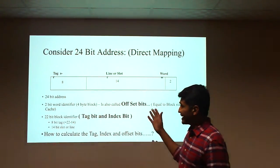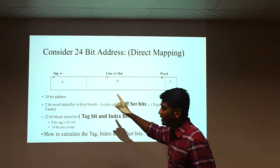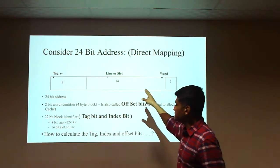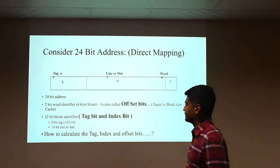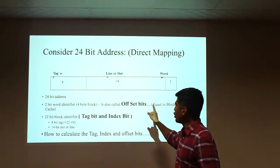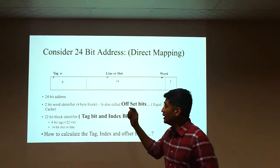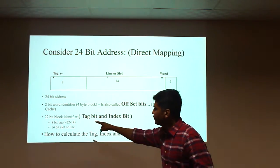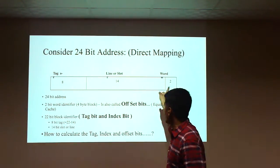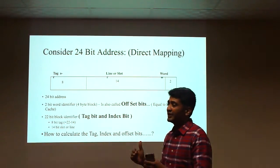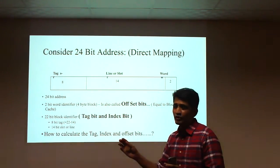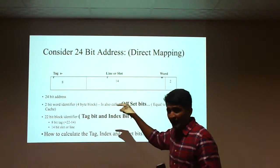In this slide we can see exactly how bits are placed in the whole address. There are three components: tag bit, index bit (also called line or slot), and word or offset bit. There is a 2-bit word identifier — that is the offset bit — and a 22-bit block identifier, which is the combination of the tag bit and the index bit.